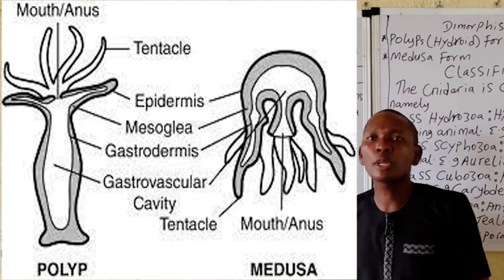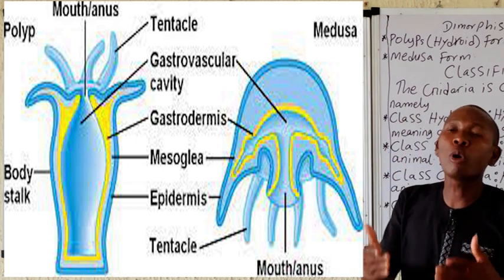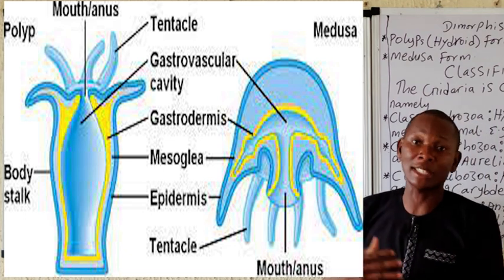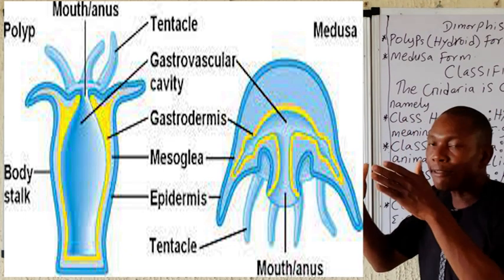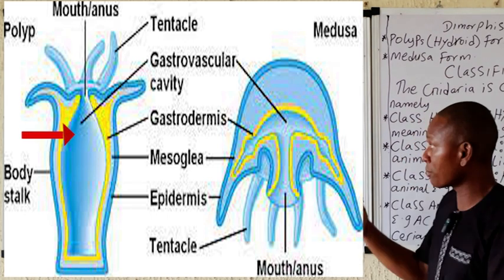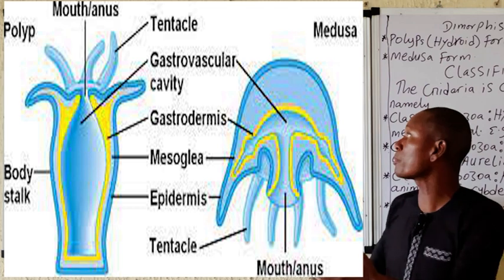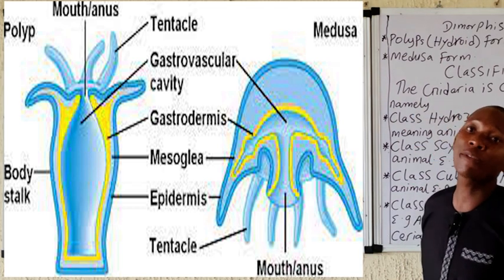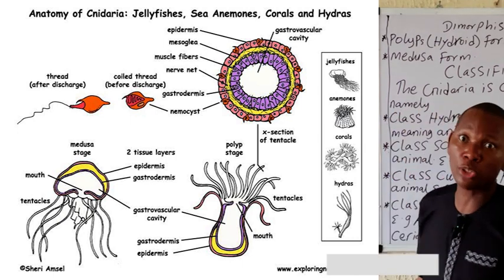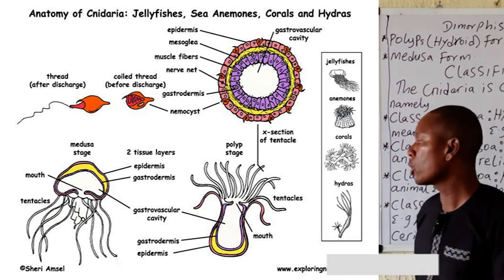These organisms possess one opening to the external environment, which is called an incomplete digestive system, where that single opening is used for both ingestion and egestion. They have a gastrovascular cavity which the mouth leads to, as shown in the diagram on the board. Their muscular system is primitive, and they are at the tissue level of organization, though some texts mention the organ level. Their body entirely lacks the system level of organization.